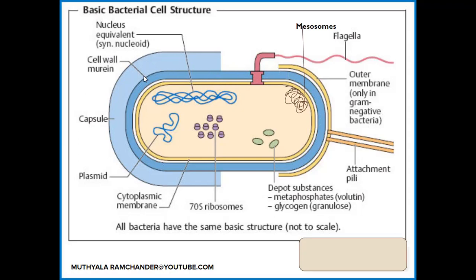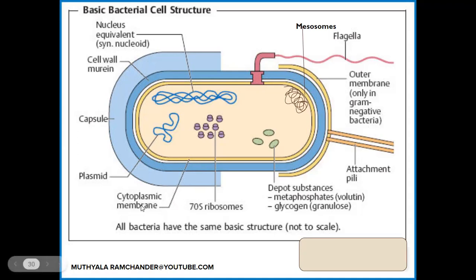Below the bacterial cell wall, a thin plasma membrane is present, also called the cytoplasmic membrane. It is made with phospholipids, proteins, and sugar substances, which are all involved in the formation of the bacterial cytoplasmic membrane.